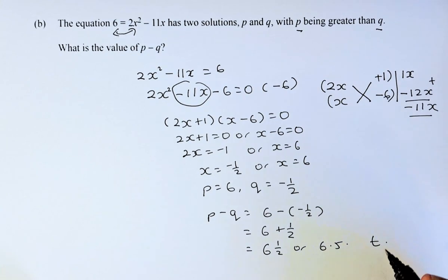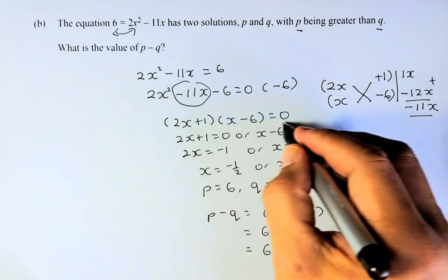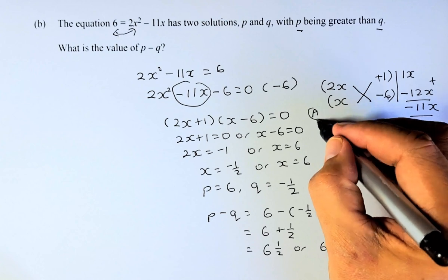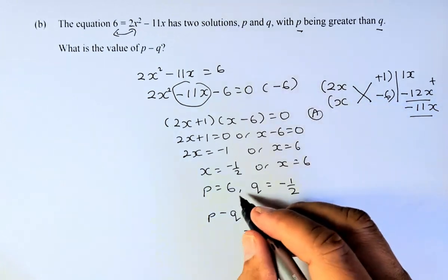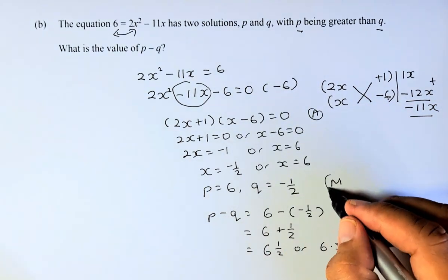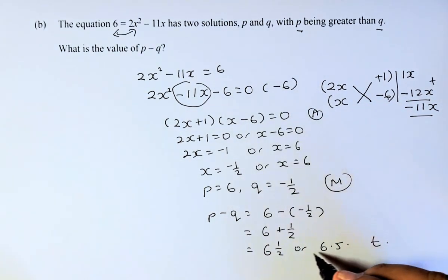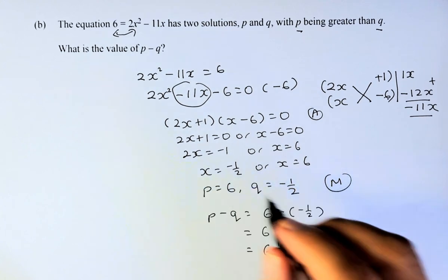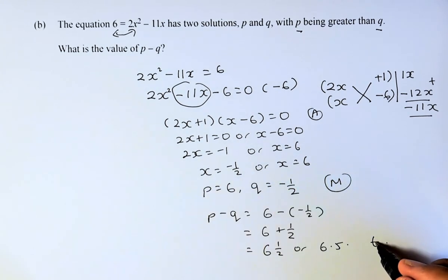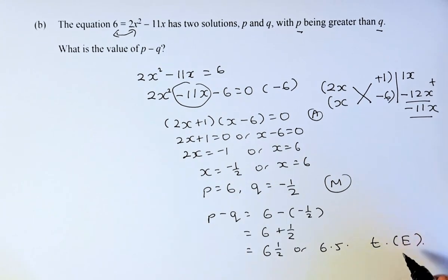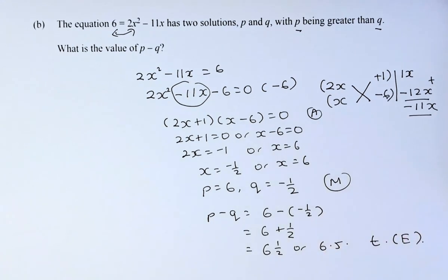And that is an Excellence. If you can solve and factorize, you get the Achieved. If you can get the two solutions, you get the Merit. And if you get the answer right for p minus q, that is the Excellence in NCEA Level 1.